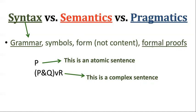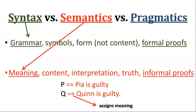Now how is semantics different than syntax? Semantics has to do not with the form but with the meaning of the things. When I tell you that P means 'P is guilty' or Q stands for the sentence 'Quinn is guilty', I'm going to use a double equals sign as an assignment operation. So P double-equals 'P is guilty' means I'm assigning the meaning 'P is guilty' to the atomic sentence letter P. Syntax is the grammar and semantics is the meaning — that's the basic concept you have to understand.